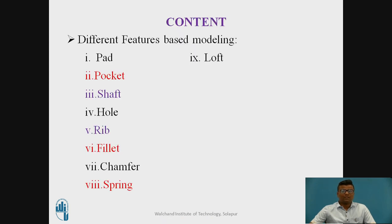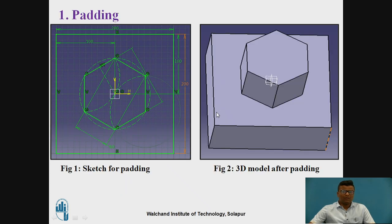These are the contents. There are different types of feature-based modeling. These are the 9 features we will discuss today. We will go through the first feature-based modeling, that is, padding.